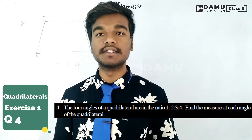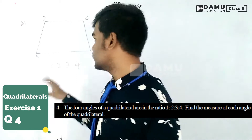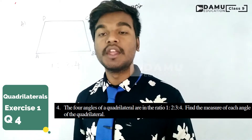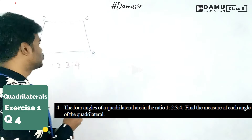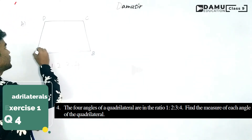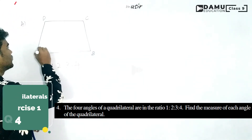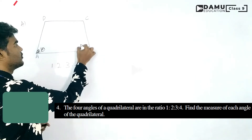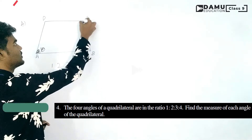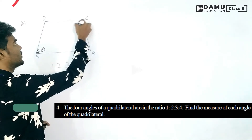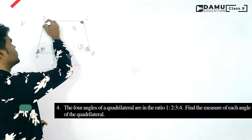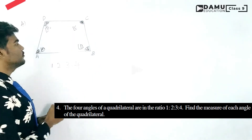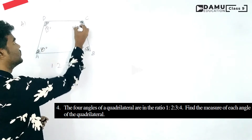They have also given the angle ratios: 1 is to 2 is to 3 is to 4. Let's draw the quadrilateral. This is angle A, this is angle B, this is angle C, and this is angle D. We have to find all the angles.